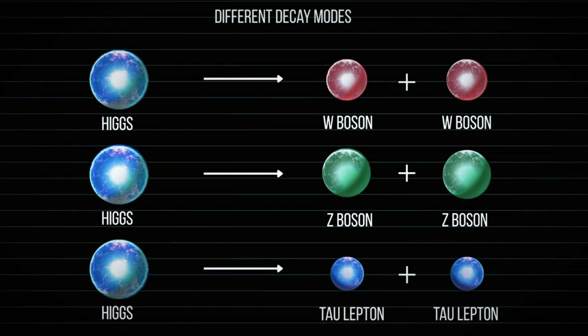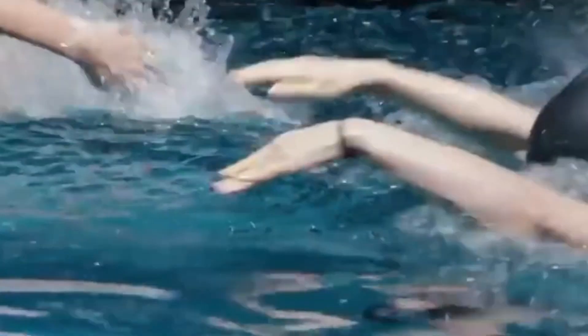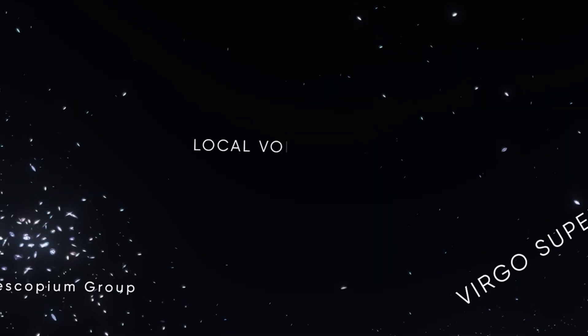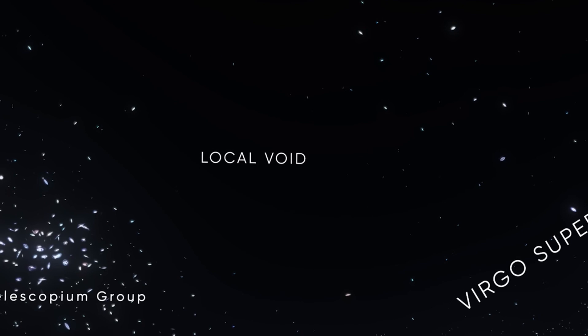Scientists believe that if they understand how the Higgs boson interacts with other particles, they may be able to explain how some particles have mass while others don't. But to get a breakthrough in their studies, scientists have to rely on particle colliders like the LHC to create high-energy environments similar to those that existed during the Big Bang. This is why the discovery of another new mysterious particle at the LHC has got the scientific community buzzing with excitement. It is one step closer to finding the origins of everything.